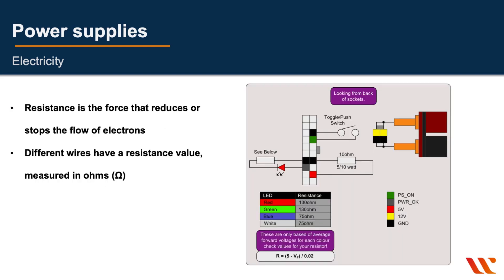In addition to voltage, current, and wattage, there is resistance. Resistance is what resists the current flowing in a wire, and it's measured in ohms. Different wires have different resistance values. If you send more current through a wire than its resistance value allows — for example, sending 100 amps through a wire with a resistance rating of 50 — that wire is going to break.